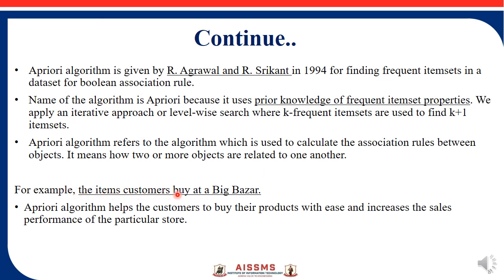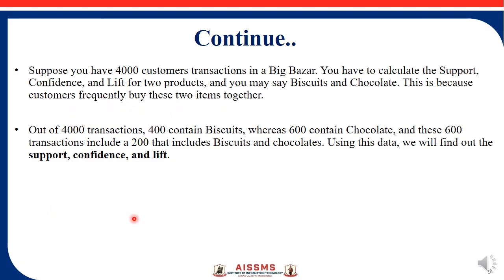For example, the Apriori algorithm is used for items customers buy at Big Bazaar. It helps customers buy their products with ease and increases sales performance for the store. Here we consider an example of 4000 customer transactions in Big Bazaar, and we have to calculate support, confidence, and lift for two products.